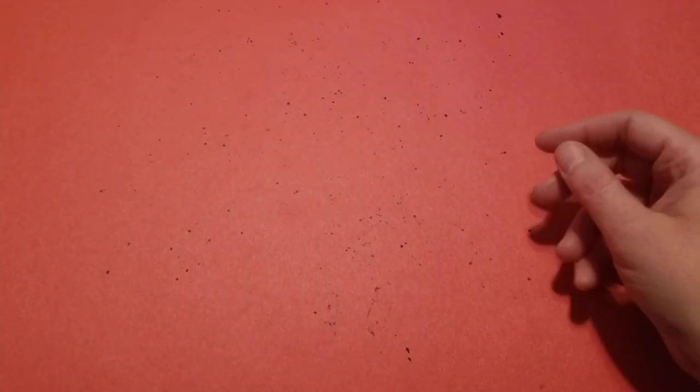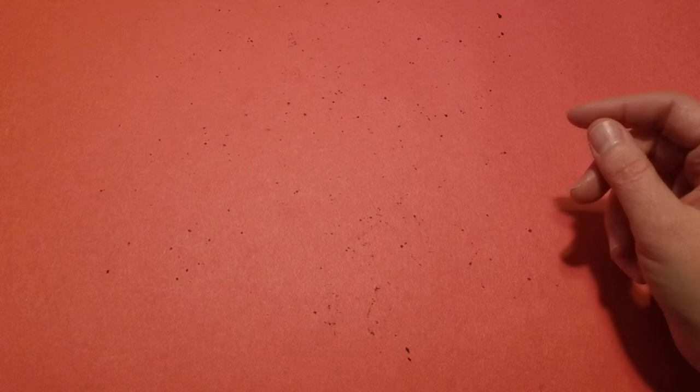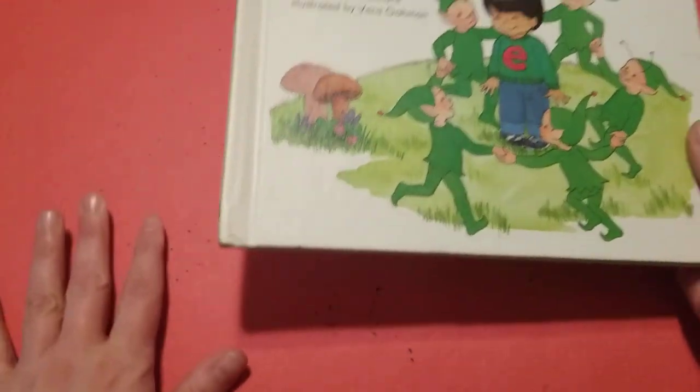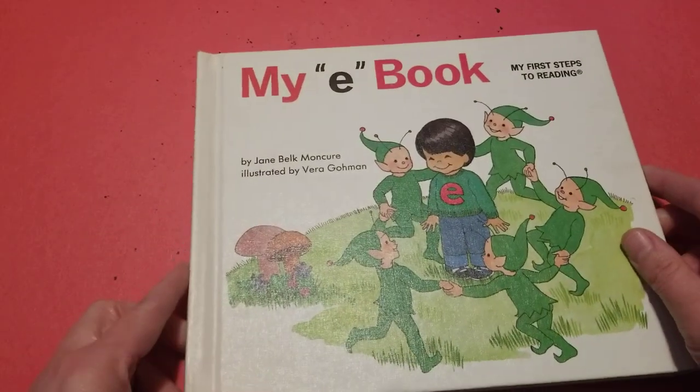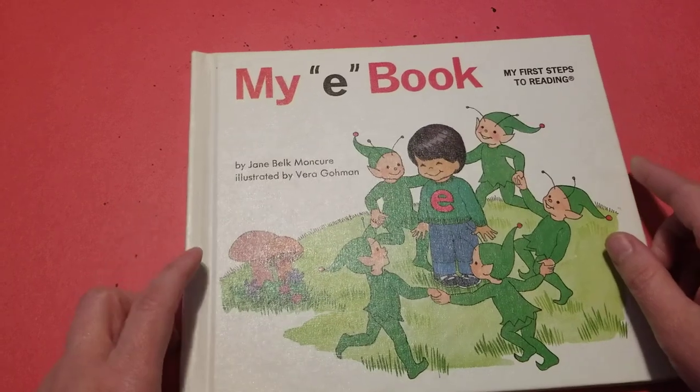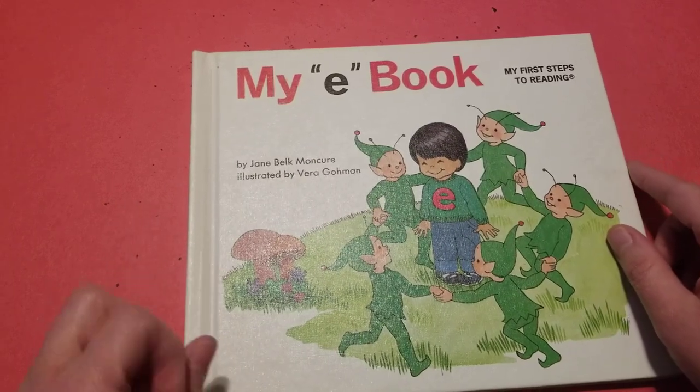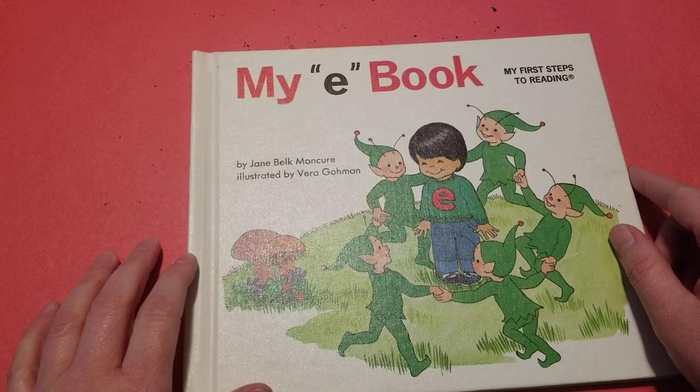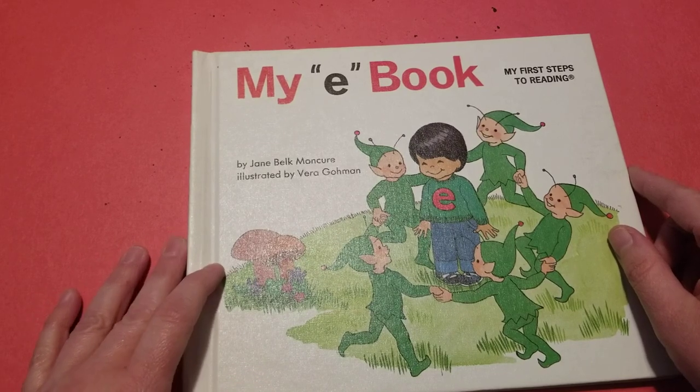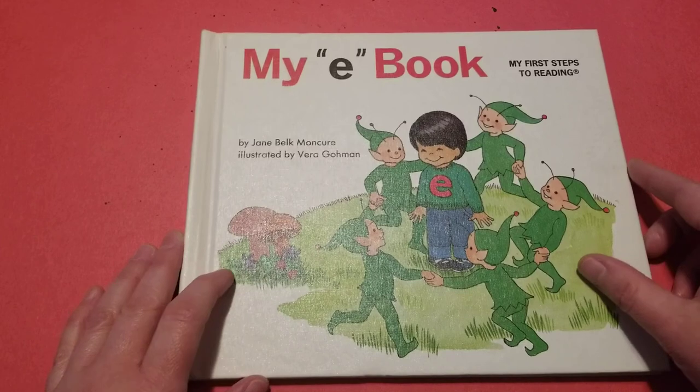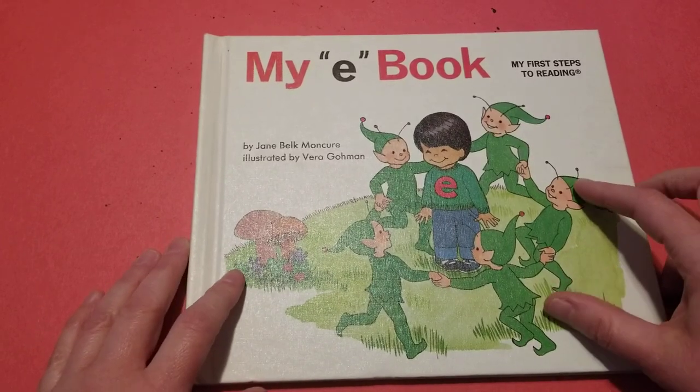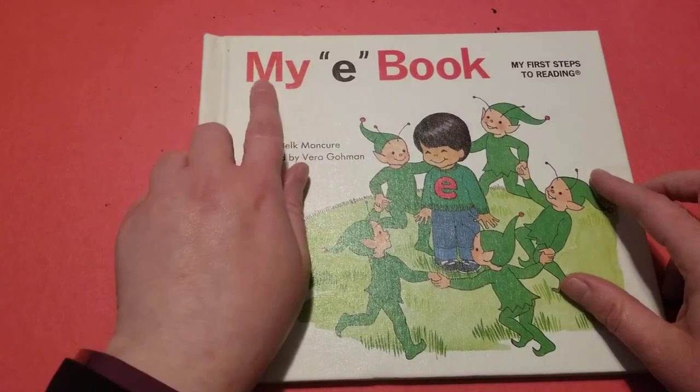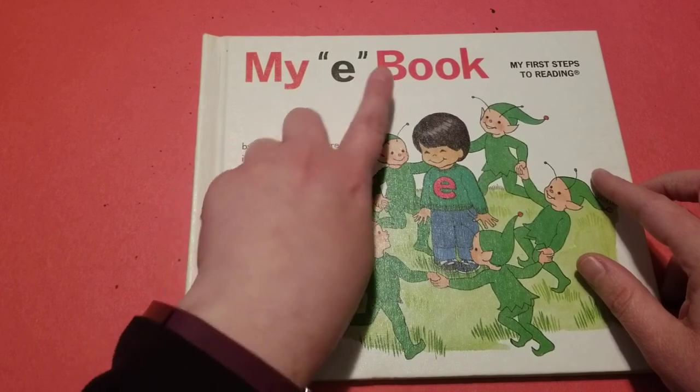Now, E is a vowel, like the letters A, E, I, O, U. And vowels, if you'll remember, can make two different sounds. Sometimes they make the short sound, like eh. Sometimes they say their name, like A or E. So this book is going to talk about both of those sounds. It is called My E Book.